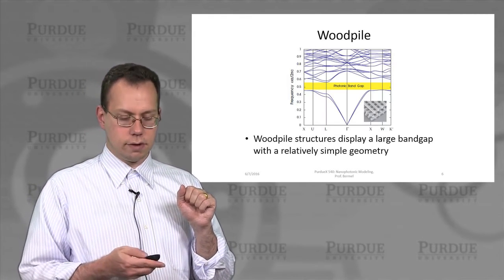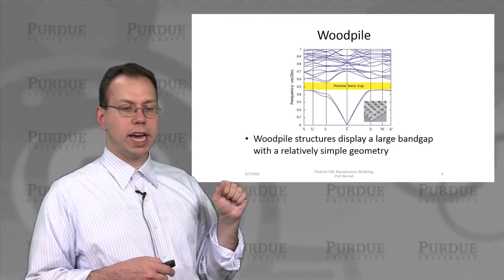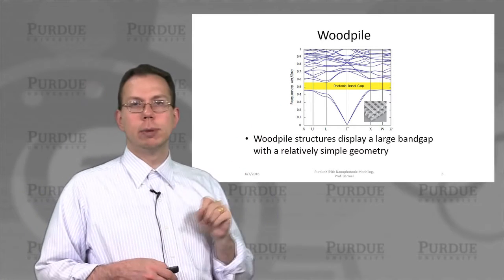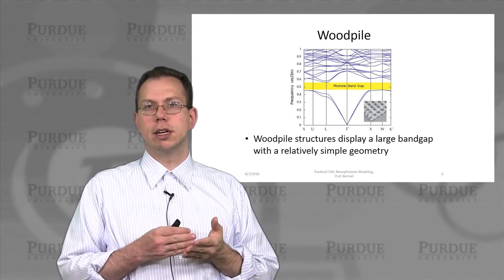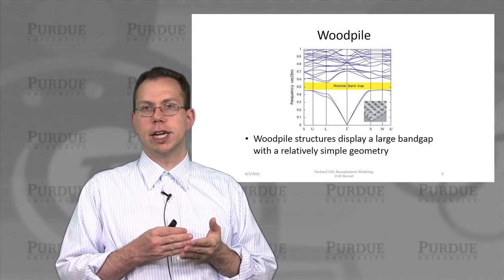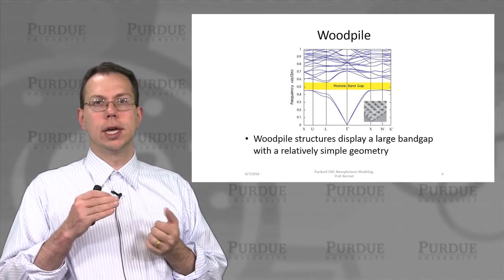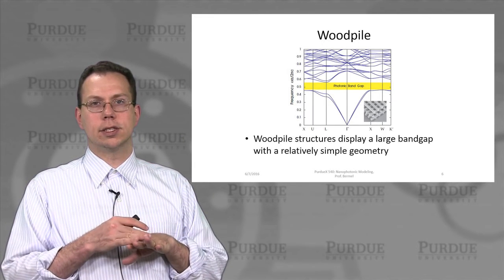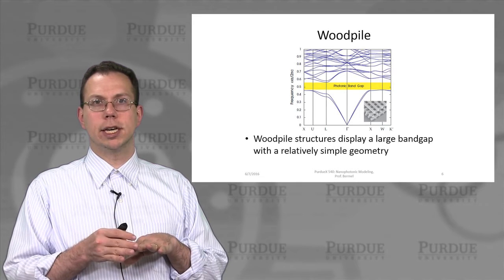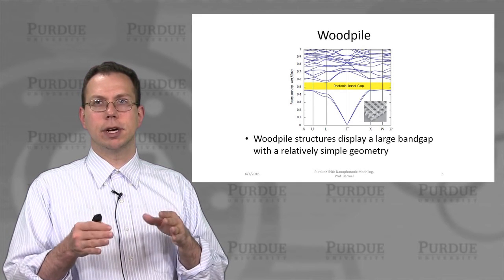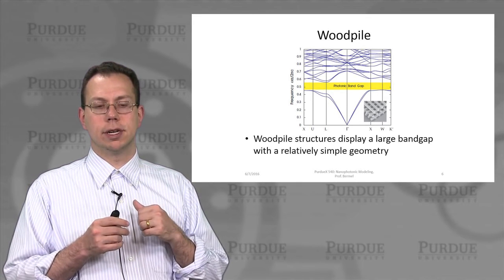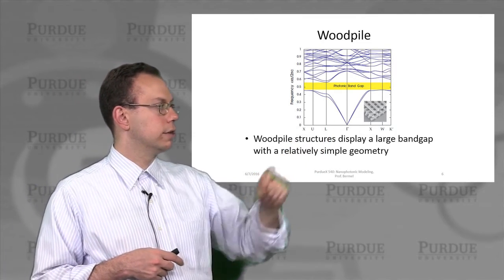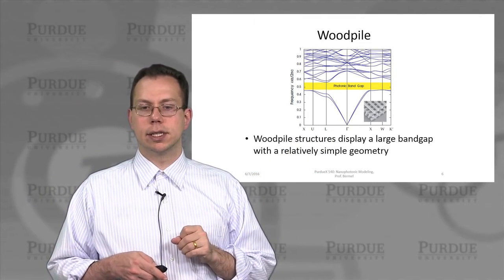If you look at the band gap, it's actually fairly similar to the Yablonovite structure, but it has the advantage that you can do layer-by-layer fabrication and you don't have to drill holes at unusual angles. This is actually something that's been built not only at microwave frequencies, but also in the infrared. It has relatively simple geometry and a fairly large band gap, as you can see.